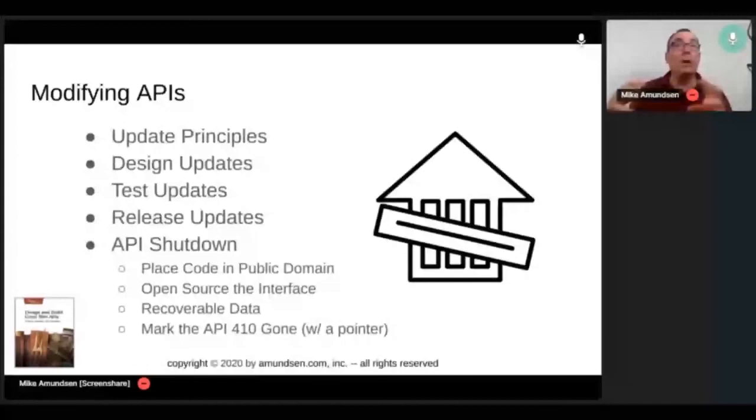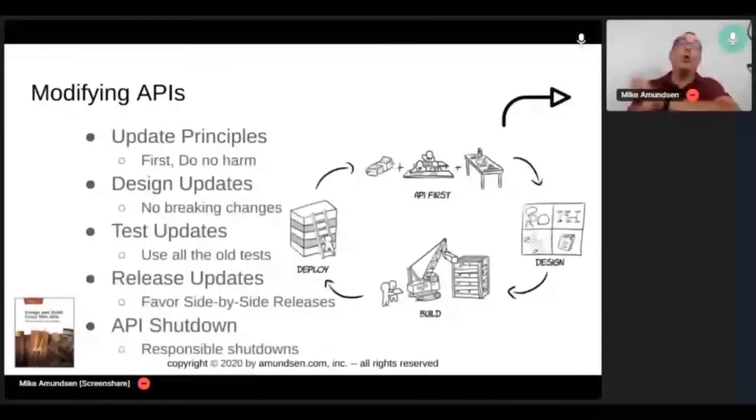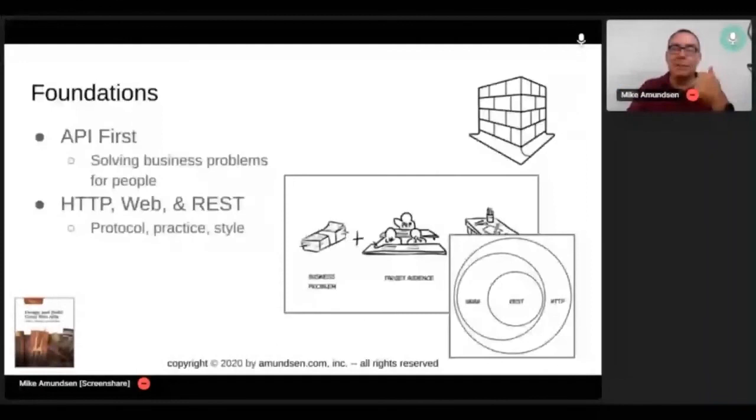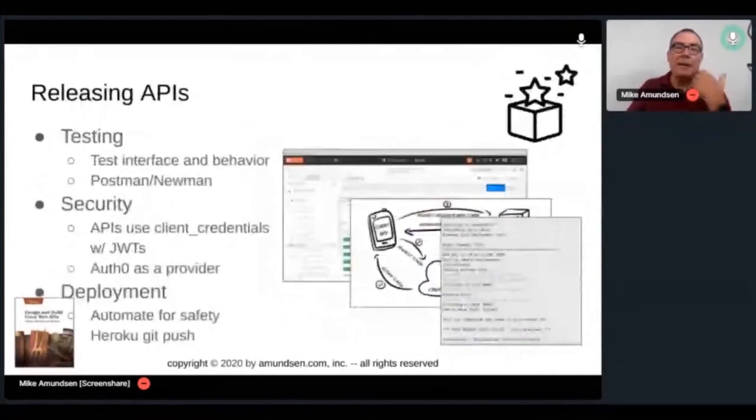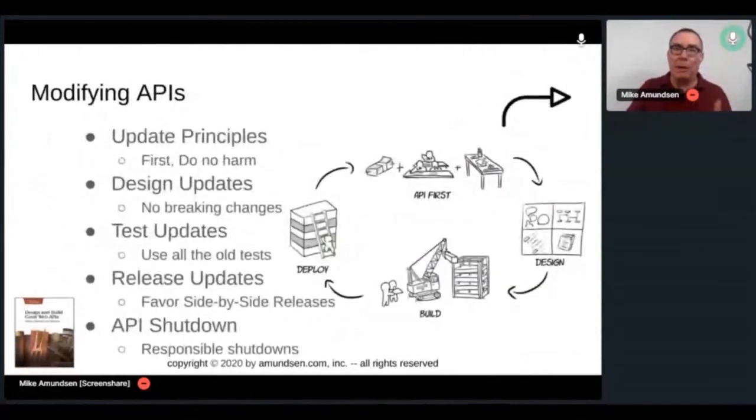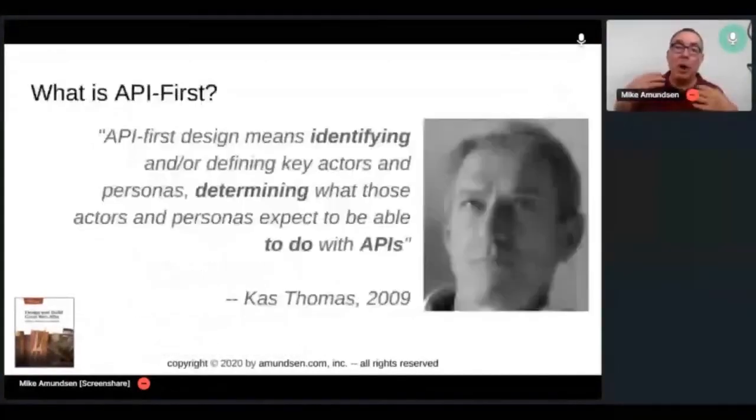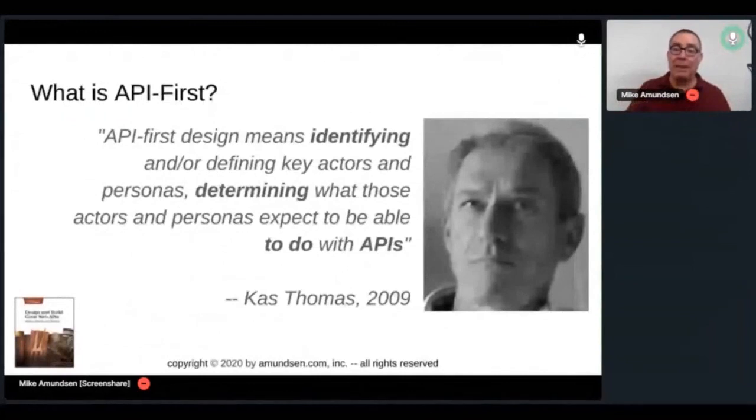First, do no harm. No breaking changes. Test using all the old tests. Favor side-by-side release. And be responsible when you shut things down. That's a whole other book. That's a whole other process. So foundations, design principles, building principles, releasing patterns, and this idea of updating. That's how you design and build great web APIs. It's a never-ending cycle, just like we talked before. Because all we're really doing is identifying what people really want, what they really need, and what they want to do with their APIs. And that's our job.